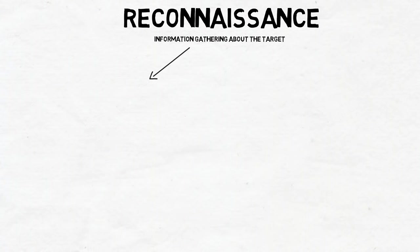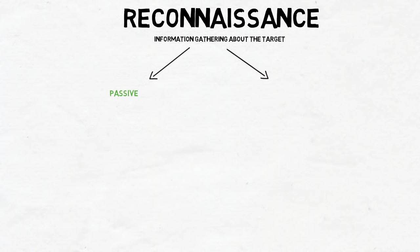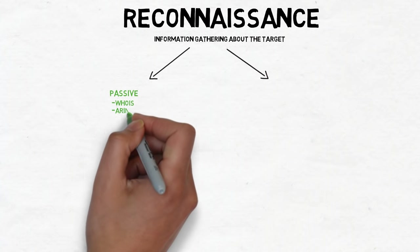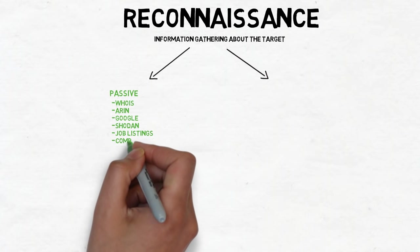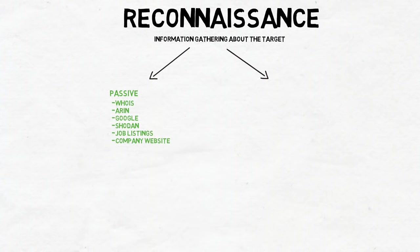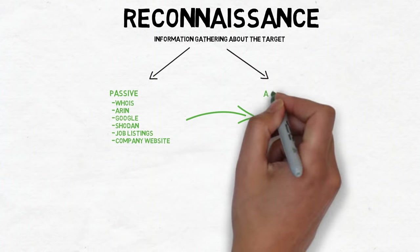The two different stages of reconnaissance are passive and active. During the passive reconnaissance stage, an attacker will use indirect methods to gather information from publicly available sources like WHOIS, ARIN registrations, Google, Shodan, job listings, and company websites. Once an attacker has collected as much public information as possible, they'll move on to active reconnaissance.